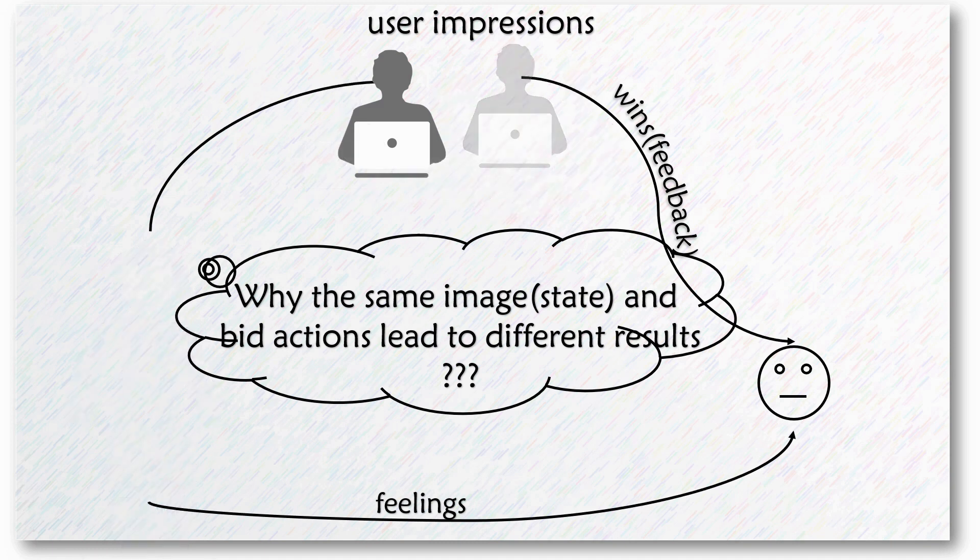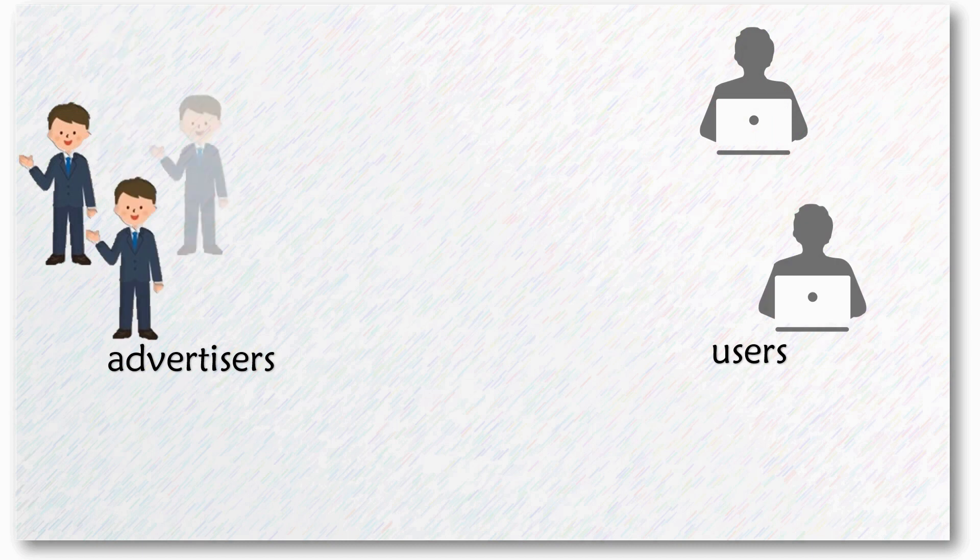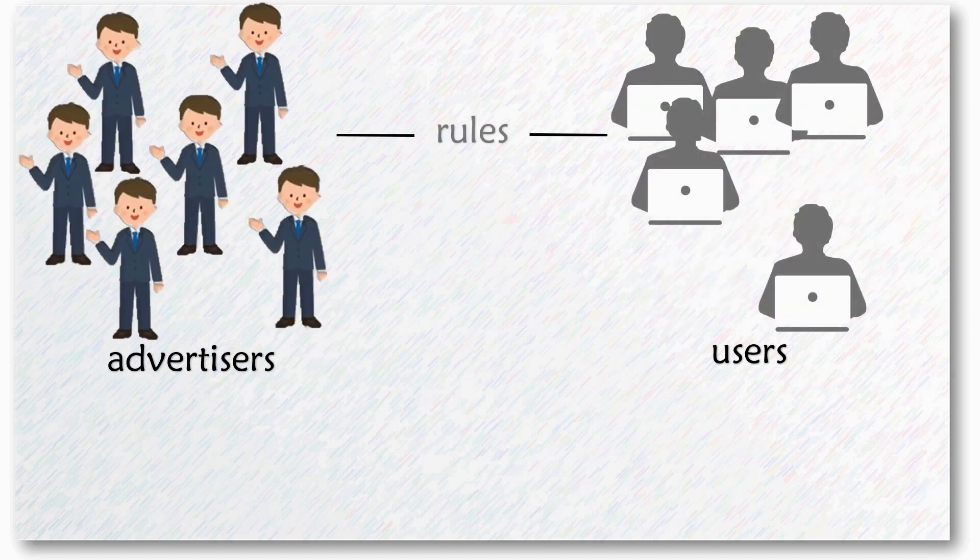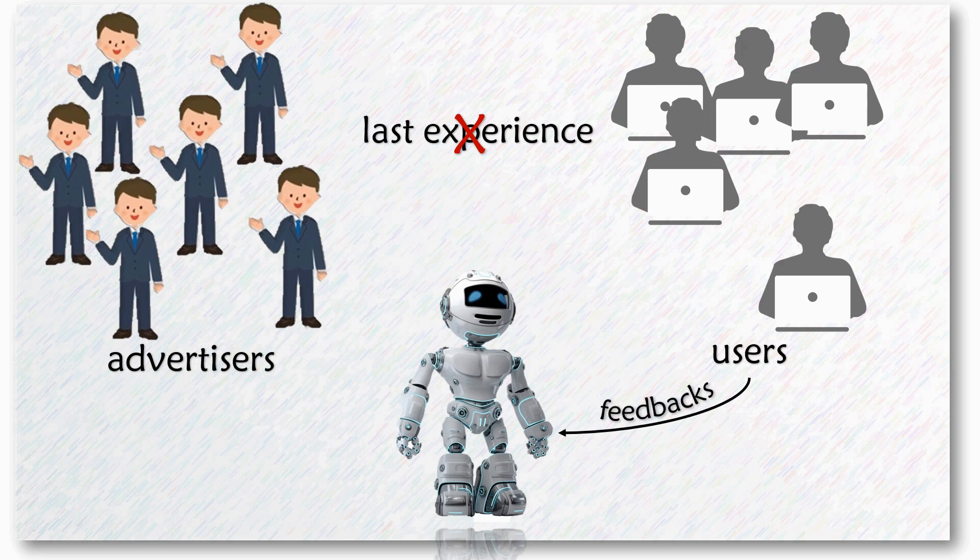In conclusion, although RL is more powerful than machine learning, it may easily fall into two problems. First, when the environment changes, for example, when the advertisers or the users change, the rules in the game are also changed. RL may fail to make right decisions because it relies on the last experience. Second, the feedbacks are not exactly right because they can be somehow random, so they cannot be trusted each time.